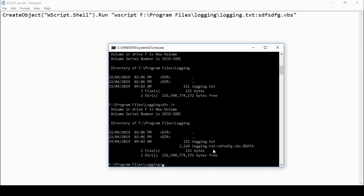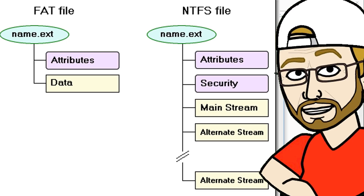Something is hiding in here. As I mentioned, it's an ADS — an alternate data stream, also called an NTFS alternate stream or a named stream. It's well known amongst those of us in the industry for a while. It's an NTFS feature: the ability to fork file data into existing files without affecting their functionality, size, or display to traditional file browsing utilities like DIR or Windows Explorer.